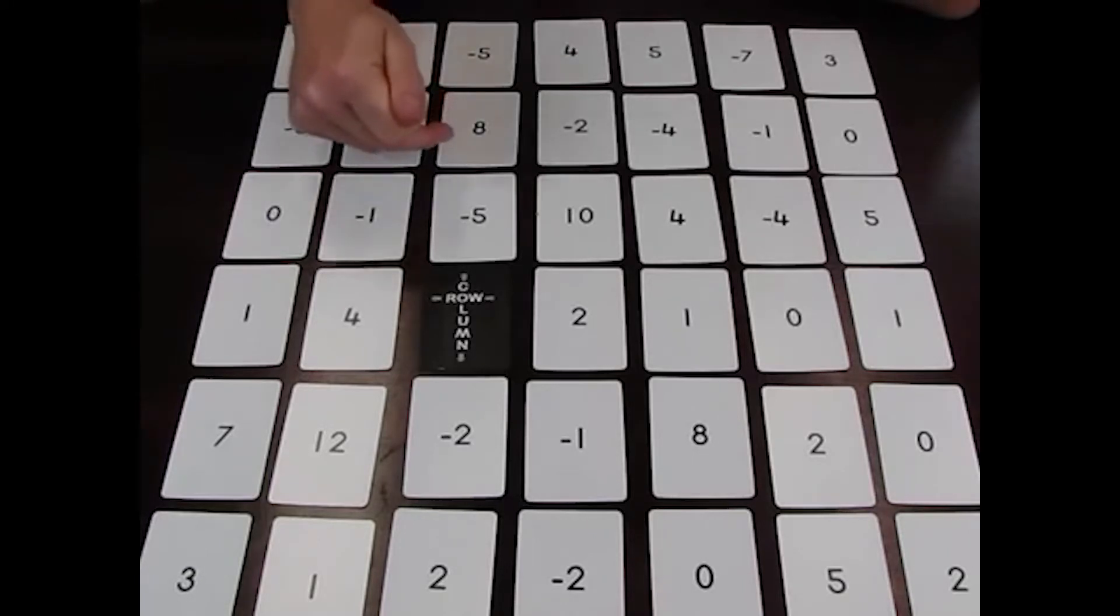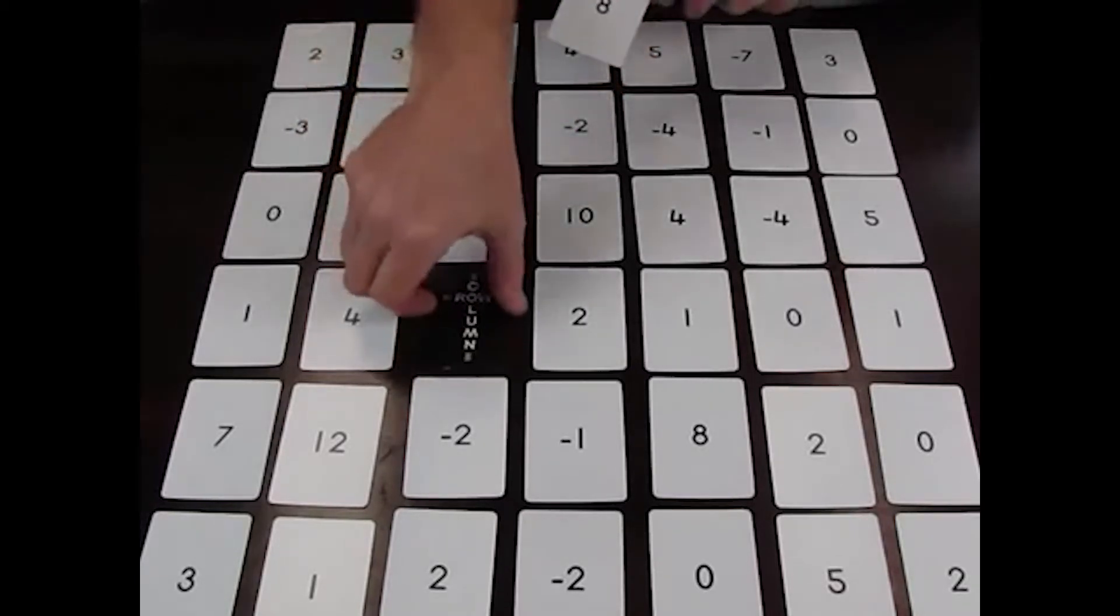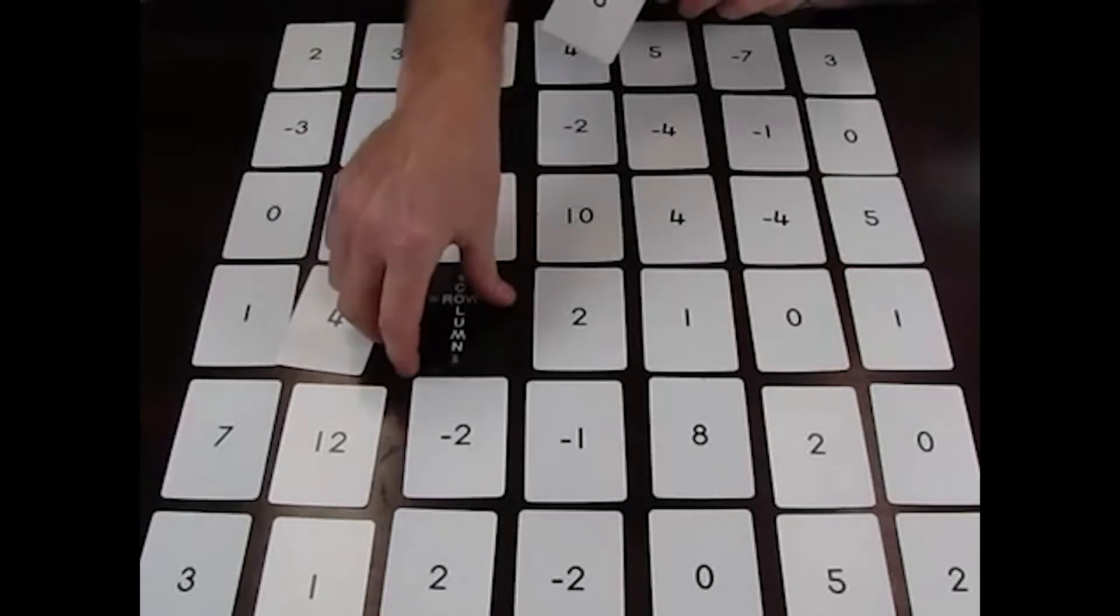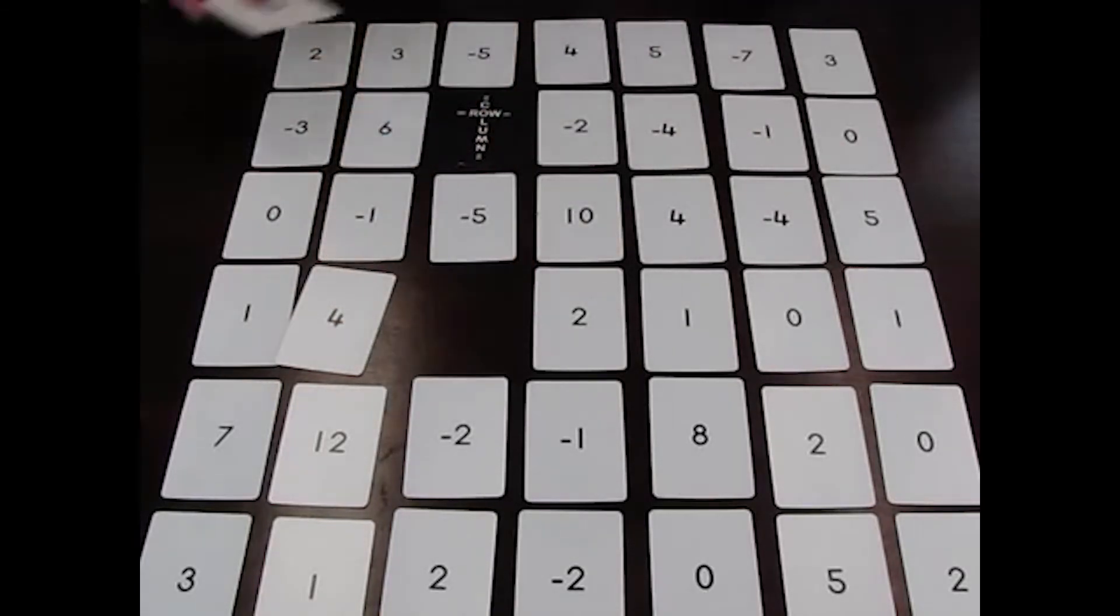So if I look in this column here, probably the largest number and the best pick would be to pick the 8. So I'm going to collect the 8, but notice that I moved the Row and Column card to that spot because that becomes the new marker. Now I've got 8.